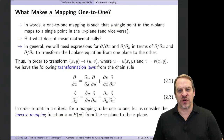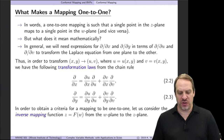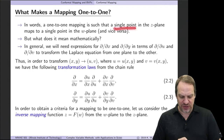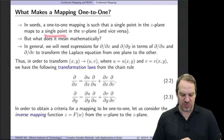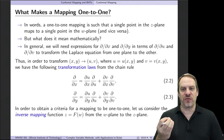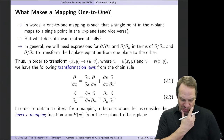Now we're ready to tackle the first of our three questions, and that first one is what makes a mapping one-to-one? We know what it means intuitively: a single point in the z-plane gets mapped to a single point in the w-plane, and vice versa. But what is the mathematical requirement for an f of z mapping to be one-to-one?